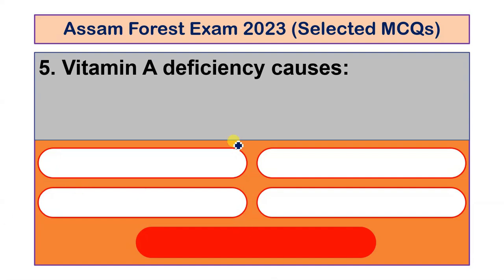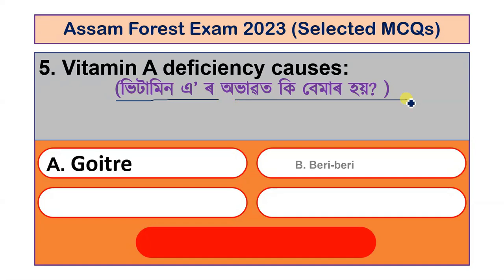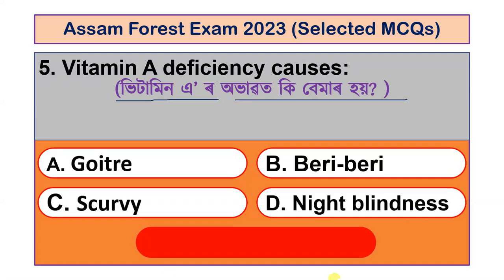Vitamin A deficiency causes scurvy and night blindness. The answer is night blindness.